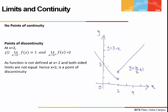In this graph, let's check x = 2. When we approach x = 2 from the left, the graph of the function is moving towards 1, so the limit from the left is 1. When we approach 2 from the right, the graph is moving towards 2, so the limit from the right is 2. Also, the function is not defined at x = 2. Since the left and right limits differ and the function is undefined there, x = 2 is a point of discontinuity.